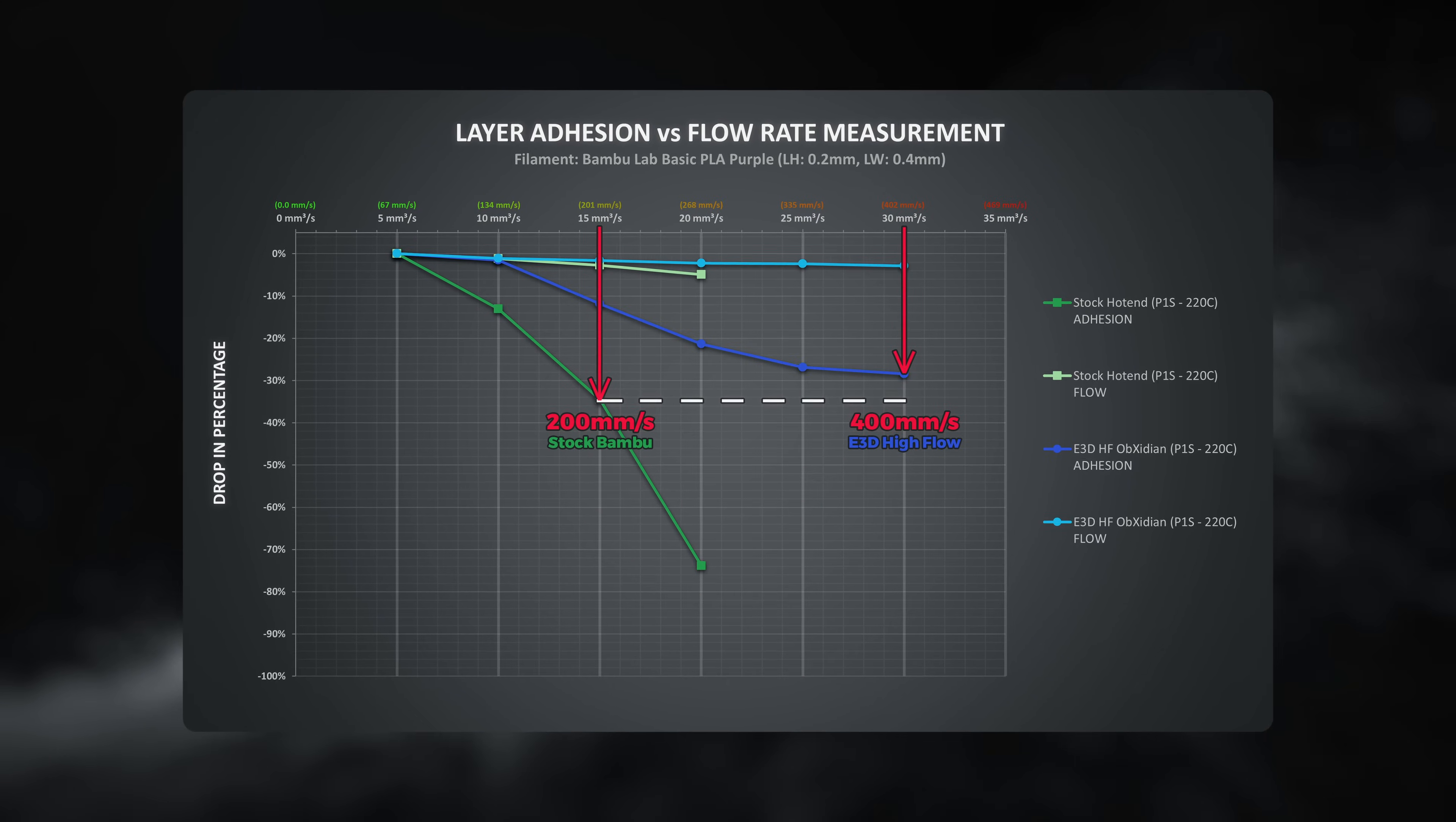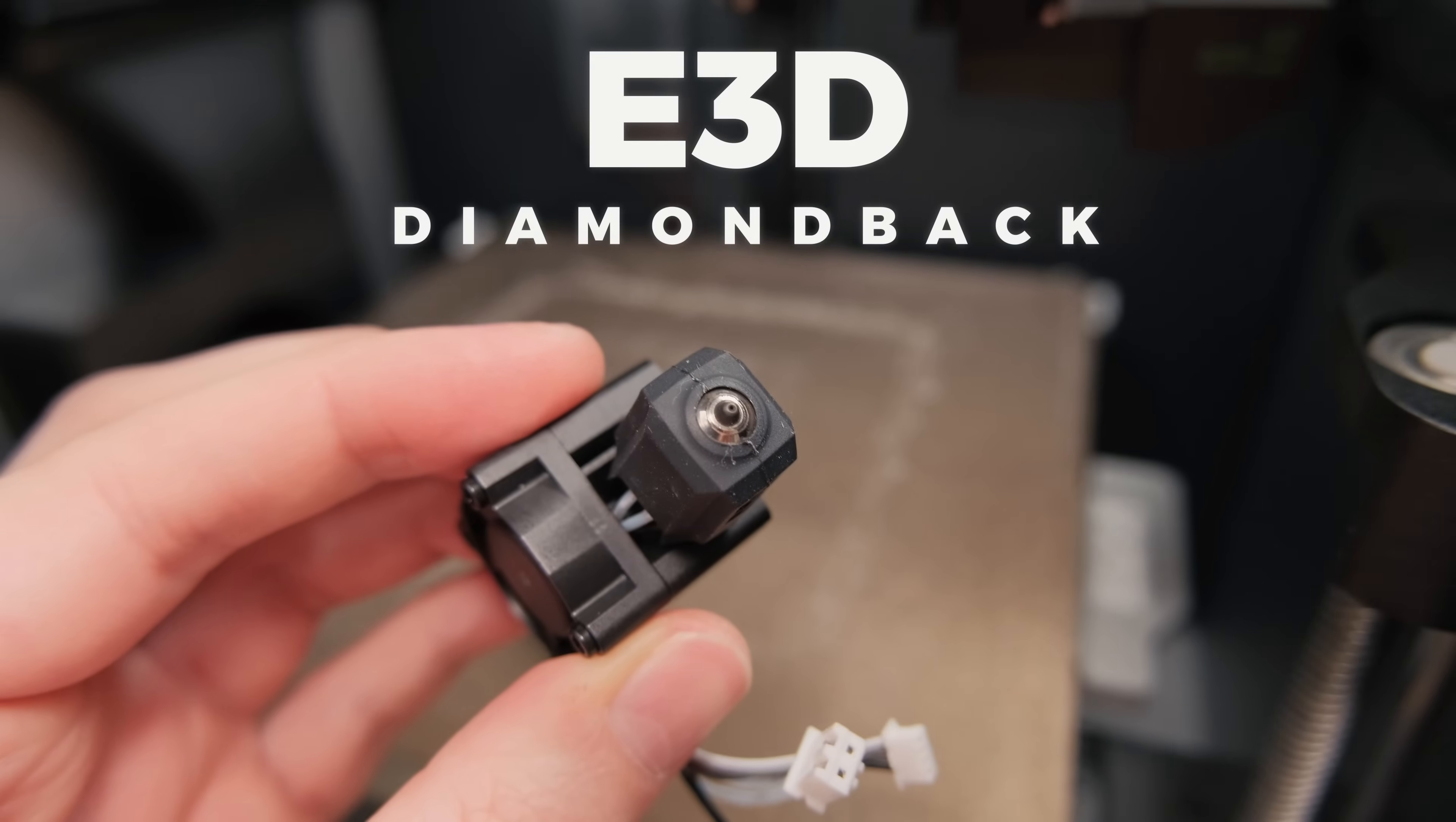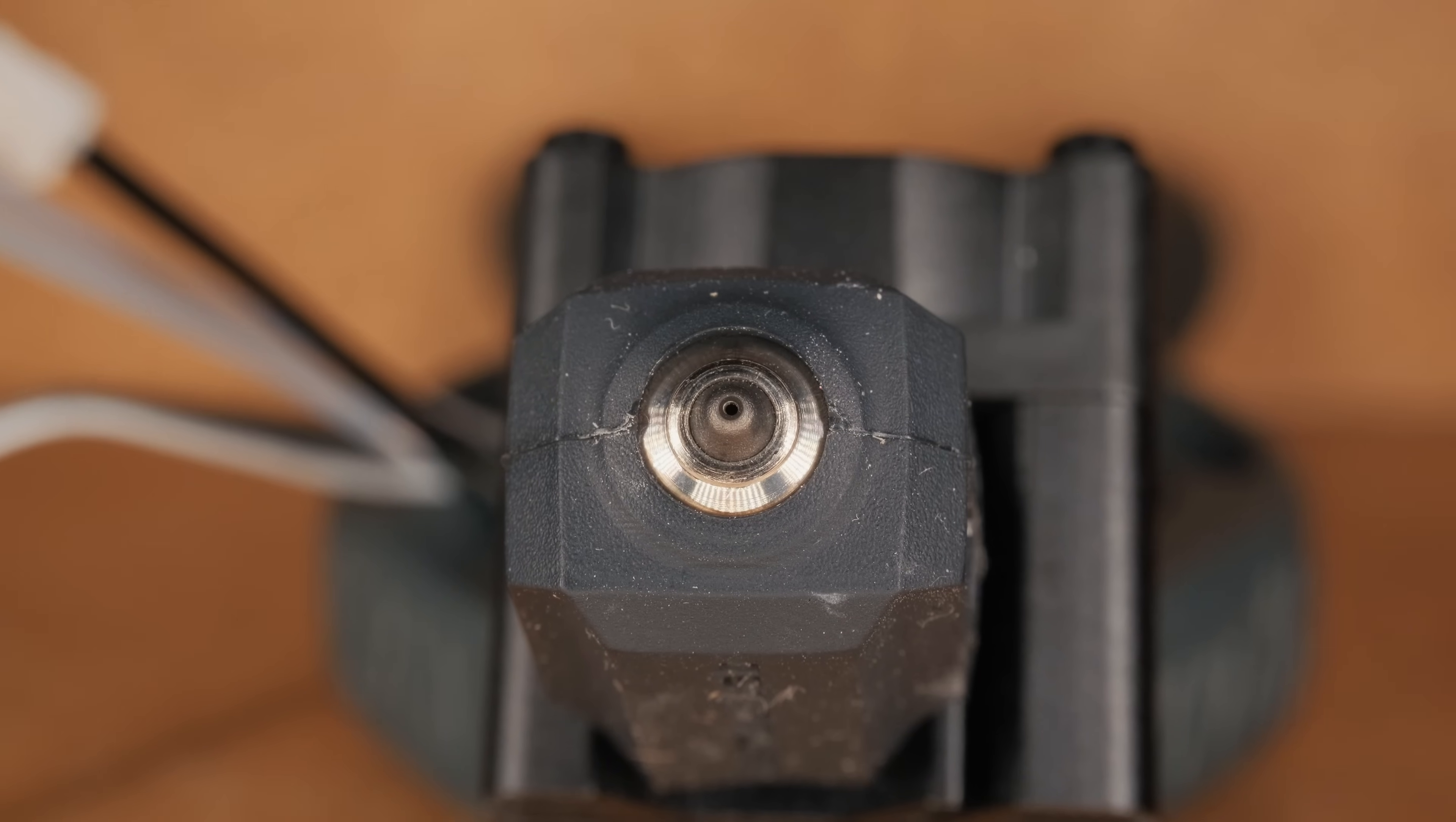In the past, I uncovered the true benefits of the E3D high-flow Obsidian hotend, and today we will see if that is also the case with the newly released E3D Diamondback. As the name suggests, it is a regular flow hotend for Bambu Lab P1 and X1 series printers with a diamond tip.